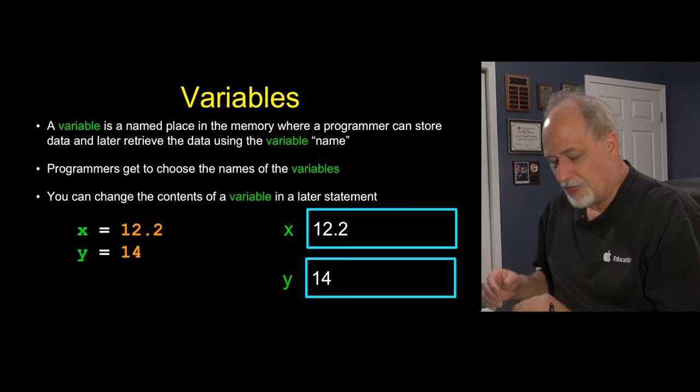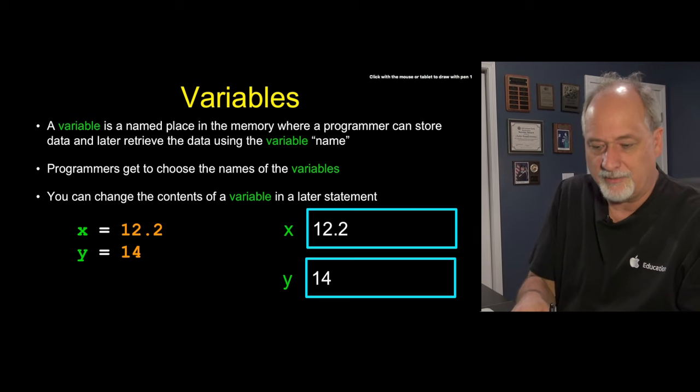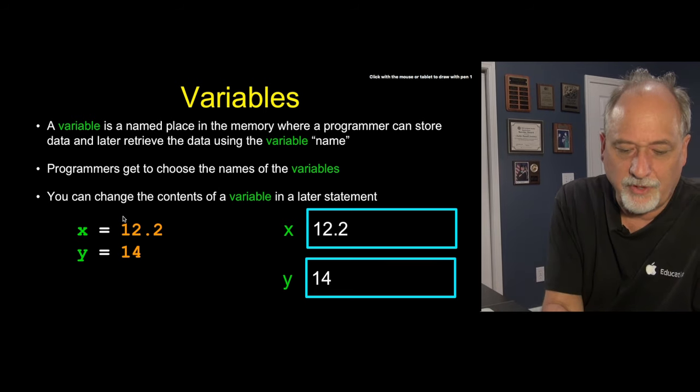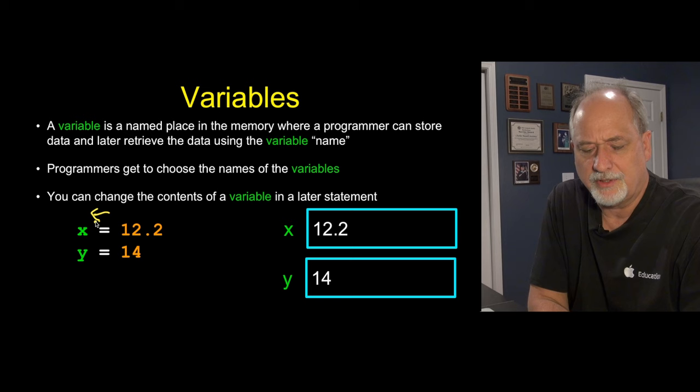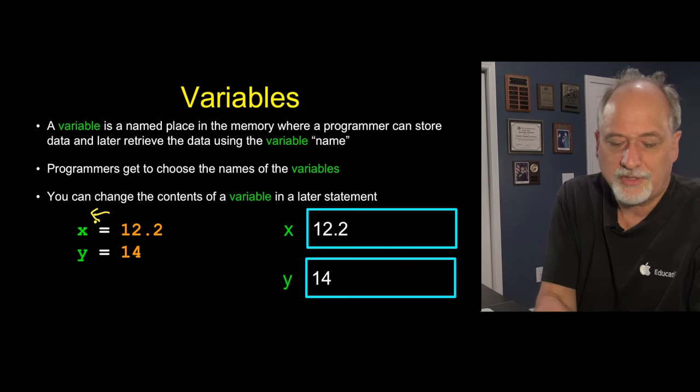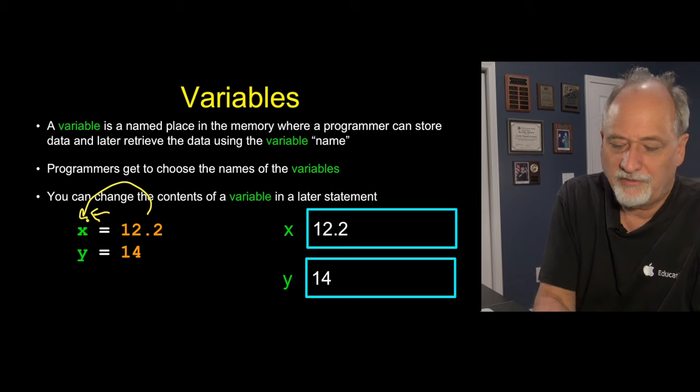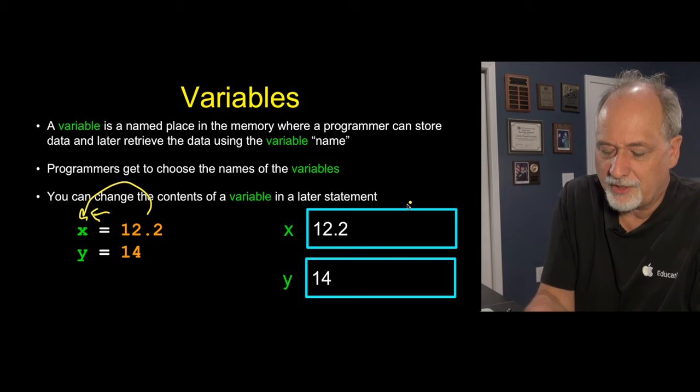And the variable, how we control the variable is through the assignment statement. And as I said before, it's important to think of the assignment statement as having an arrow to it. So this is not saying x for all time is the same as 12.2. What it's saying is take 12.2, find a place, find some memory in your computer there,